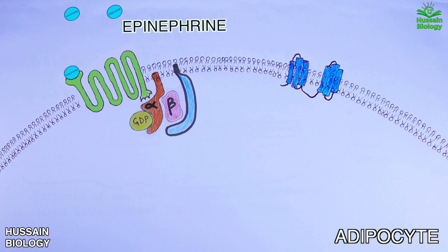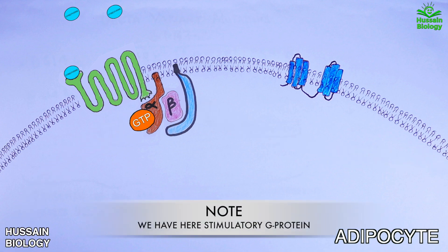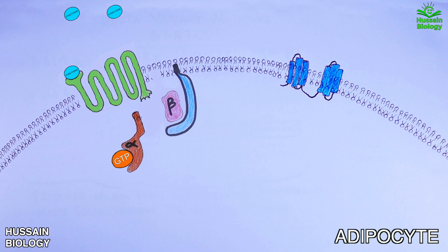Upon binding we have the conformational change in the GPCR domain with which the GDP bound with the G alpha protein is replaced by GTP. So the binding of GTP with G alpha subunit drives the activation of G protein. And this G alpha subunit dissociates from rest of G protein.